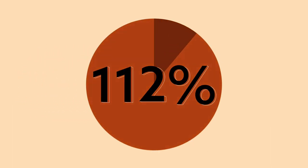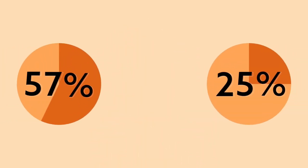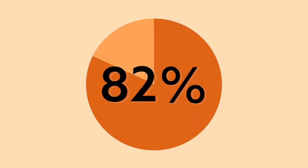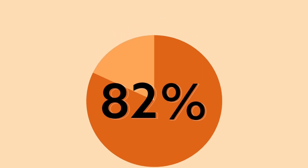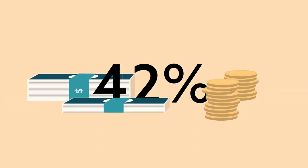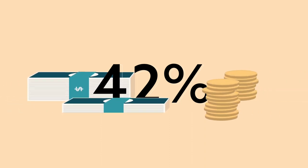So what does this all mean? A combined ratio of more than 100 percent means that an insurance company had more losses and expenses than earned premiums and lost money on its underwriting operations. A combined ratio of less than 100 percent means that the insurer is making a profit from underwriting insurance.